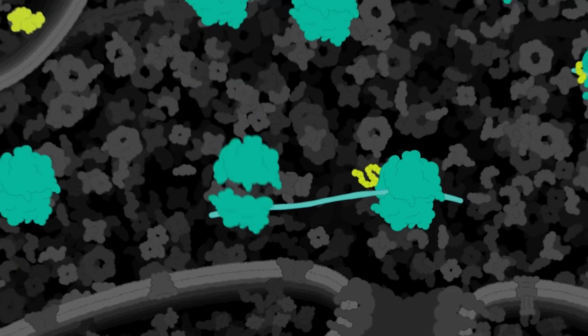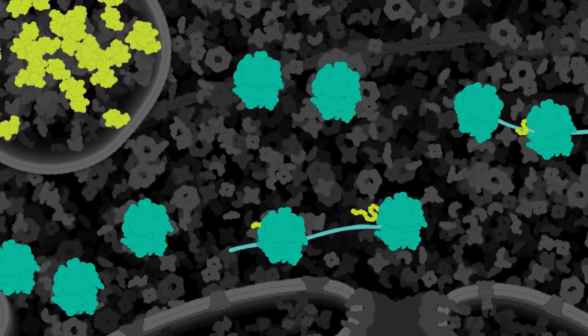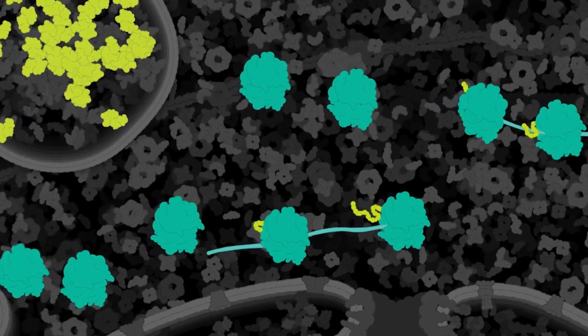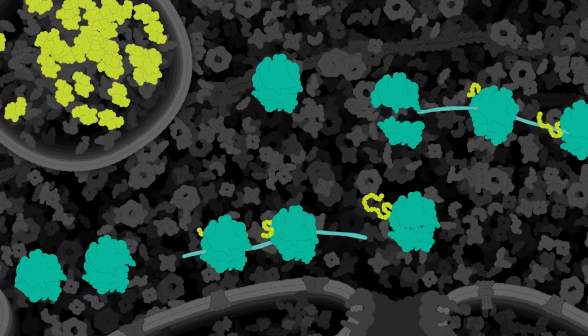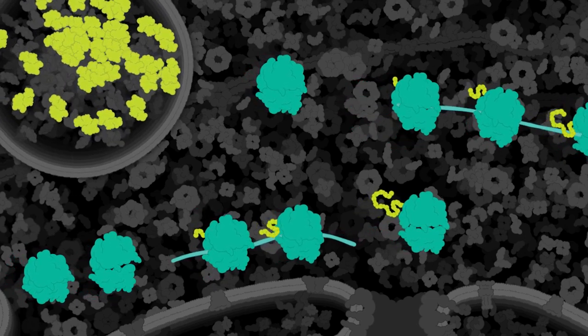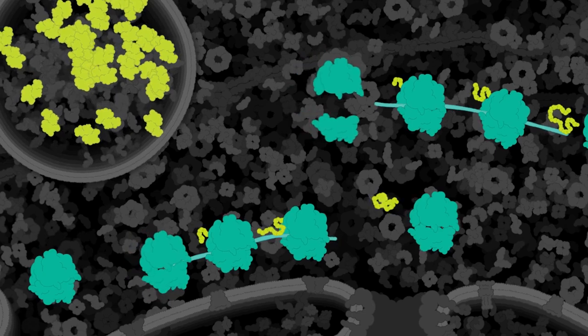Multiple ribosomes can read each mRNA copy to build many luciferase proteins at a time. When the ribosomes finish reading the mRNA, the proteins are released and they fold into their final shape.